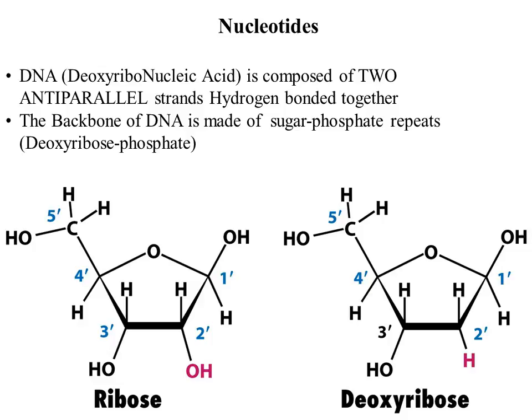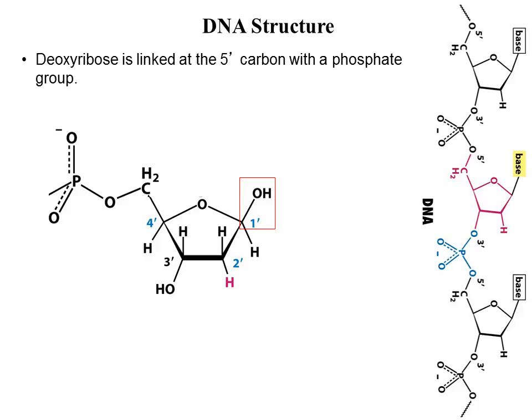This is incidentally why DNA is more stable than RNA — because this OH is more reactive than just having a hydrogen, and so RNA can be degraded easier and faster. Now, the backbone of DNA, which forms the two antiparallel strands, consists of ribose linked together with phosphate groups, the PO4.